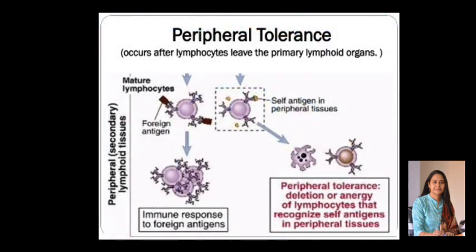In peripheral tolerance, it occurs in lymphocytes that leave the primary lymphoid organs. Whenever lymphocytes leave the primary lymphoid organs and move to different sites and come in contact with a foreign antigen, they differentiate normally — the immune response to foreign antigens leads to generation of the same type of clones. But in the case of self-antigens present in peripheral tissues, when lymphocytes come in contact with these tissues, they may either be deleted or undergo anergy — that is, unresponsiveness of lymphocytes that recognize self-antigens in the peripheral tissues.